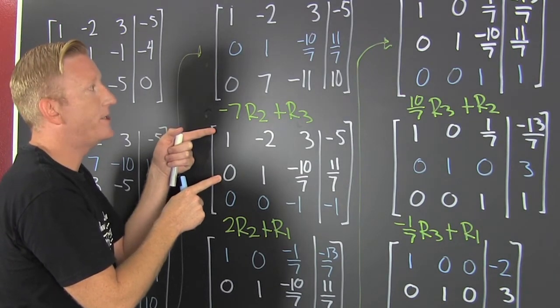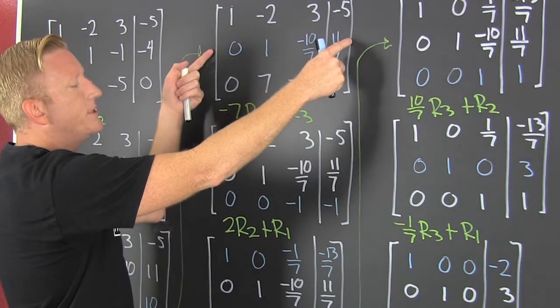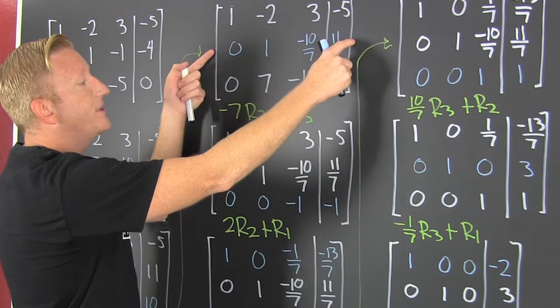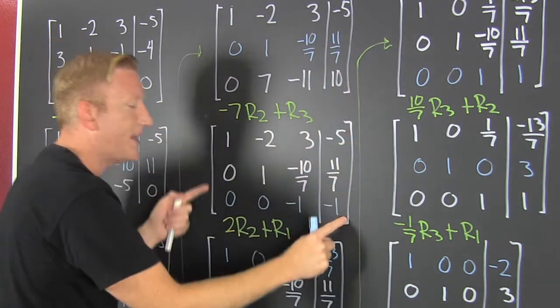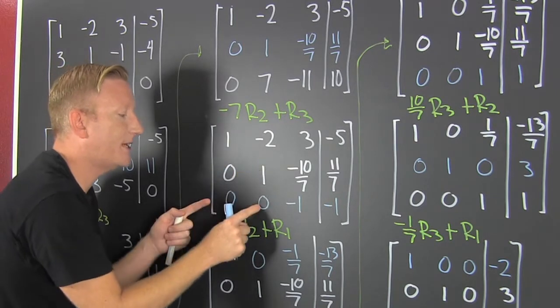Then, I proceed with the operation. So it's minus 7 times row 2 plus row 3. So I multiply this entire row by 7 and I add it to that one. And that's how I get this. So now I got a 1 kill kill 1 kill.